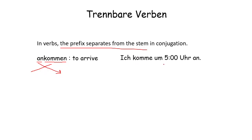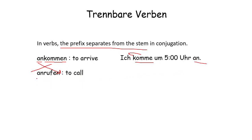For example: 'Ich komme um fünf Uhr an' — I arrive at five o'clock. The verb 'kommen' conjugates with 'ich' and 'an' goes at the end of the sentence. Anrufen means 'to call'. So 'rufen' goes to second position and 'an' goes at the end.